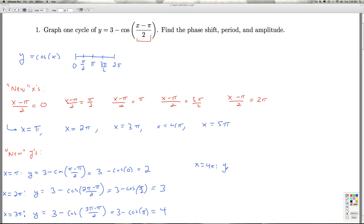For x equals 4π, I get y equals 3 minus cosine of 4π minus π/2, which would be 3 minus the cosine of 3π/2. The cosine of 3π/2 is 0, so that gives me 3.